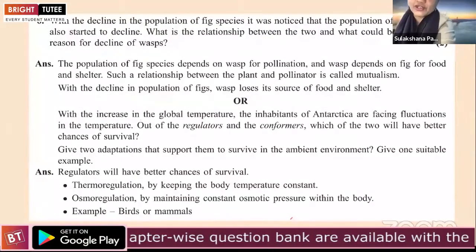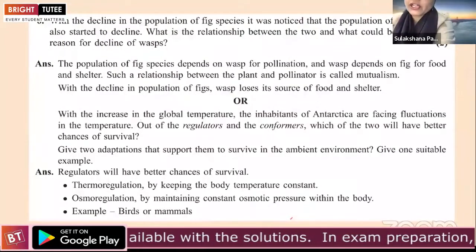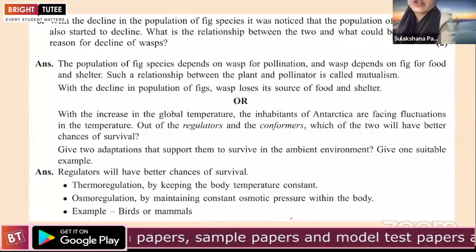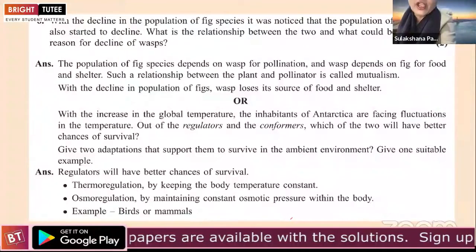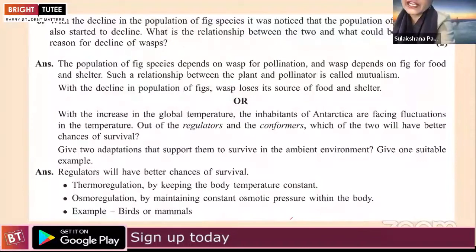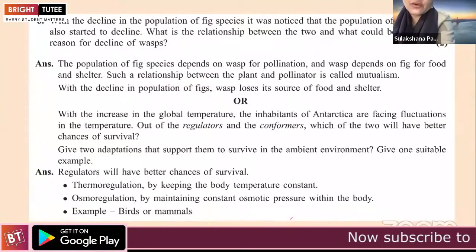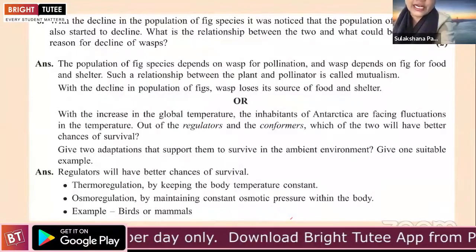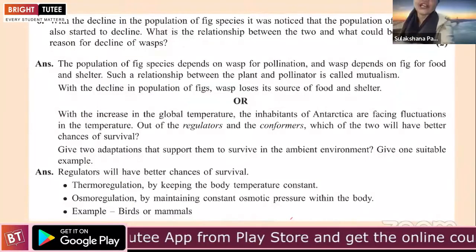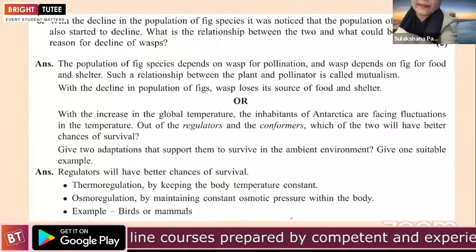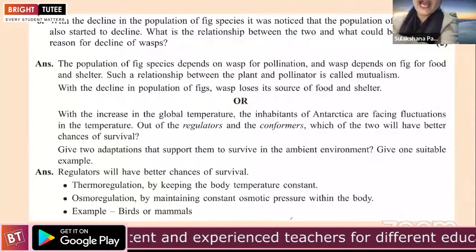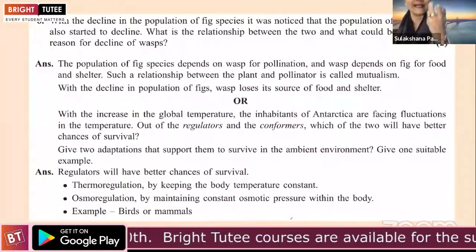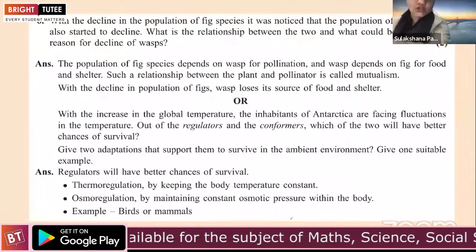Question 6 is from biodiversity: 'With the decline of the population of fig species, the population of wasp species also started to decline. What is the relationship between the two, and what could be the possible reason for the decline of the wasp?' The answer is that the fig population depends on the wasp for pollination and the wasp depends on the fig for food and shelter — this relationship is mutualism. Population interaction is a very important topic for application-based and situation-based questions.